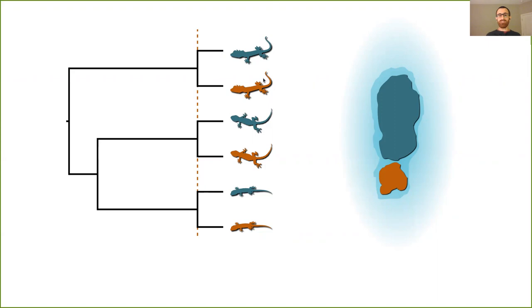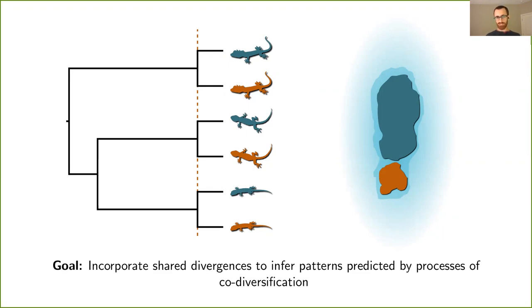This is lizards on trees, which I think is fantastic, but this could also be three individuals bringing different lineages of a virus to a social gathering that would generate similar patterns of divergence. This could be three different members of a gene family on a segment of a chromosome that gets duplicated. Lots of interesting processes across the life sciences generate this pattern of shared divergences across the tree. Our current methods assume this can't happen, so we're limited on our ability to study these processes. So that's the goal here, is to incorporate shared divergences into phylogenetic inference so that we can actually test the patterns that are predicted by these processes of co-diversification.